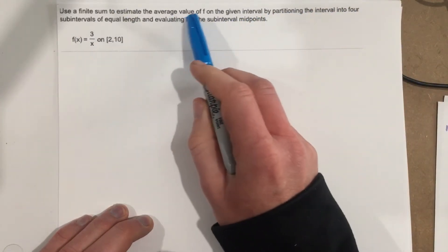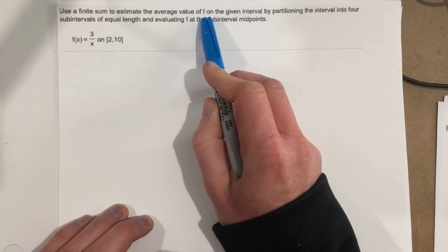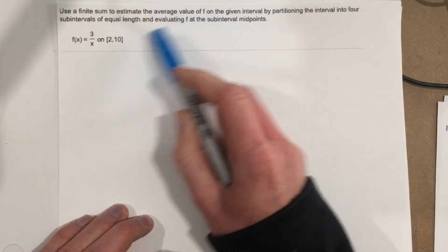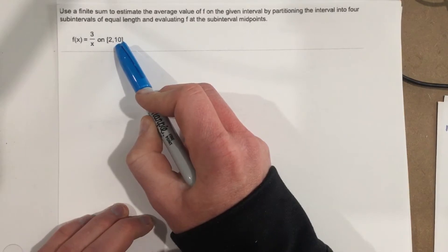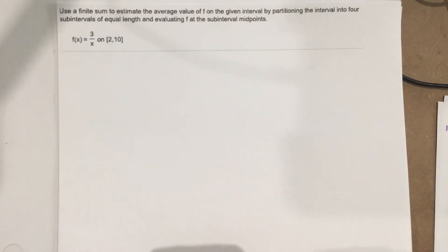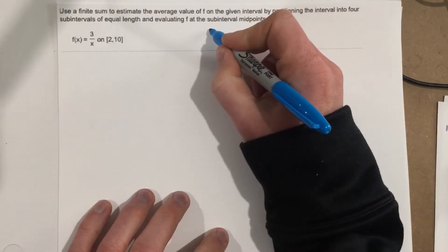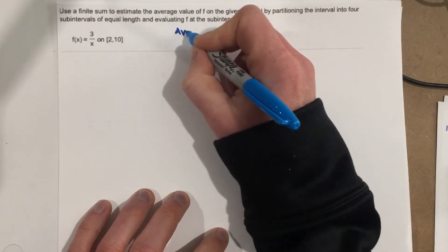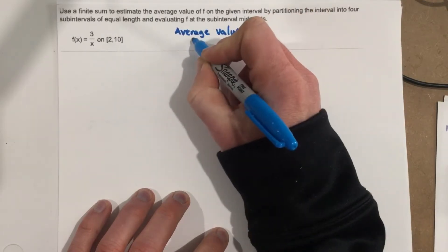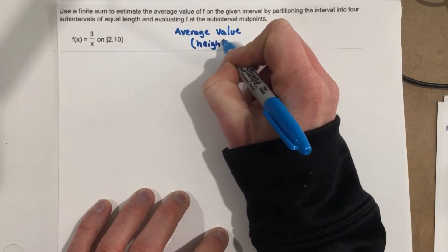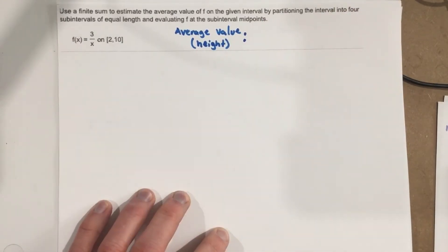And they want us to find the average value of f. So what are they really asking us for there? They're asking us for what's the average height of this function over this interval. If we think of rectangles that way, we're looking at what's the average height of our rectangles there. How do we find that? To find average height, or the average value, I'll say average value, and then I'll put in parentheses, this is the height.